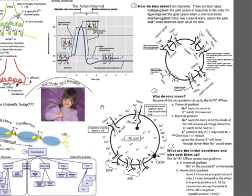It's about as fast a signal as you can create — not as fast as electrons, but these ions move pretty fast. And if you want to get a signal from one end of a neuron to another, changing the voltage is a pretty quick way to do it.